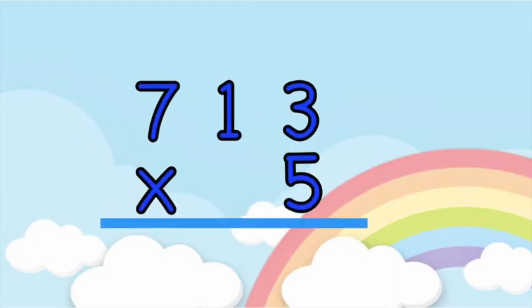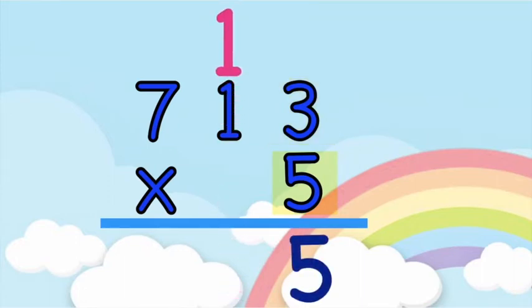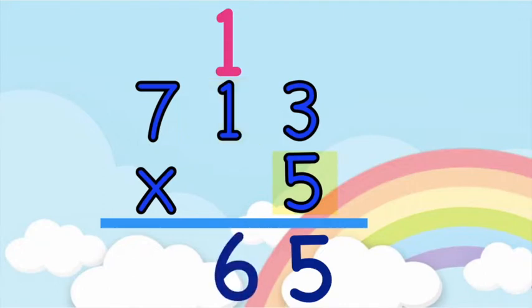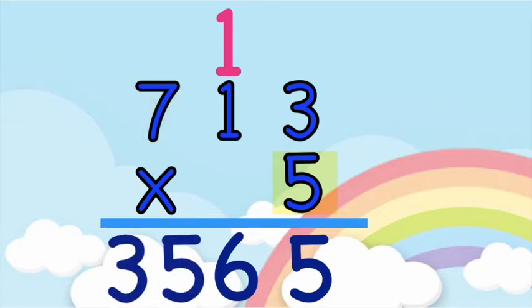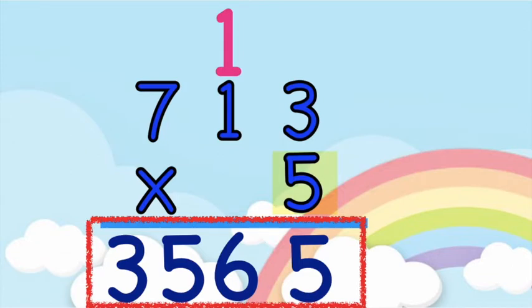How about if we have this: 713 times 5. Let's multiply 5 and 3. 5 times 3 — 5, 10, 15. So we have 15. Write 5 at the bottom, then carry 1 at the top of 1. Then let's multiply 5 to the tens place. 5 times 1, that is 5, plus 1 is equal to 6. And then the hundreds place: 5 times 7 — 5, 10, 15, 20, 25, 30, 35. So the product of 713 and 5 is 3,565.